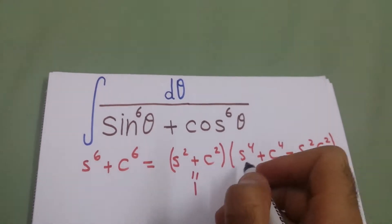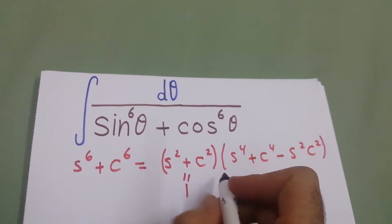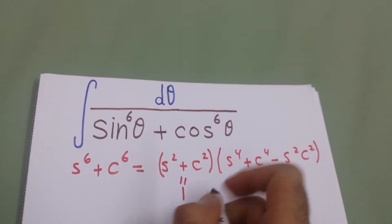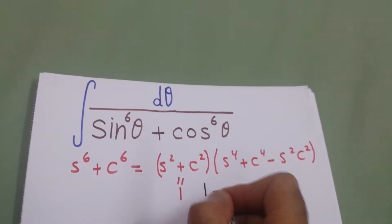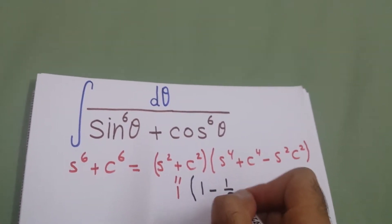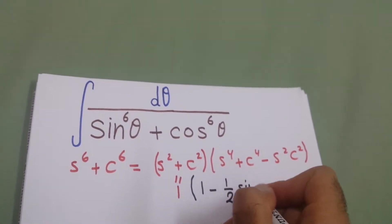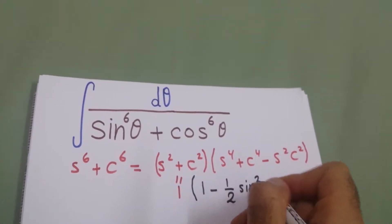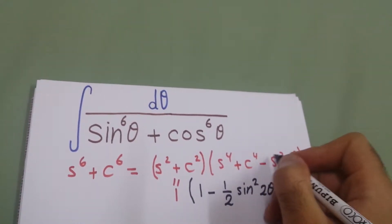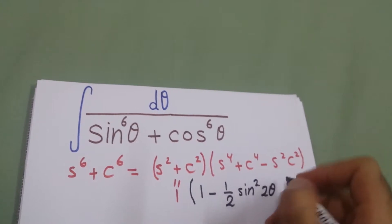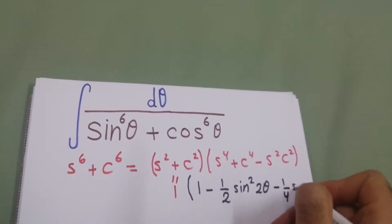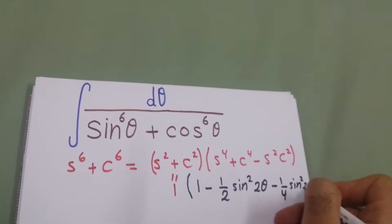For the other bracket, we have sin⁴(2θ) + cos⁴(2θ). We can write it as 1 minus one-half sin²(2θ). We also multiply and divide by 4, so it becomes 1 minus one-quarter sin²(2θ).